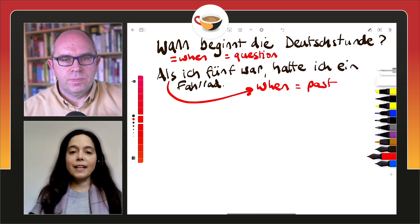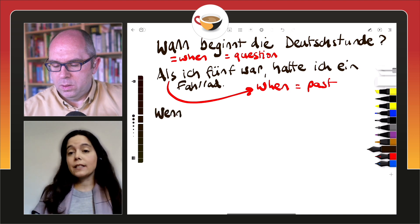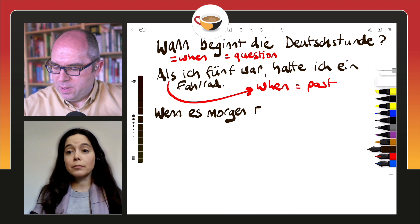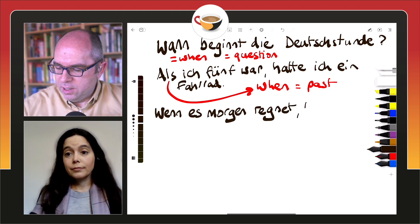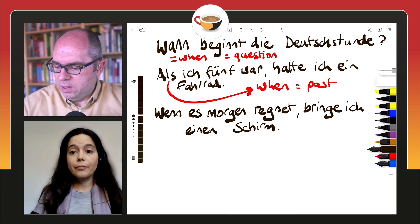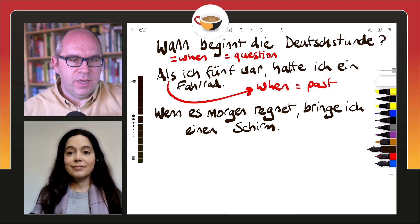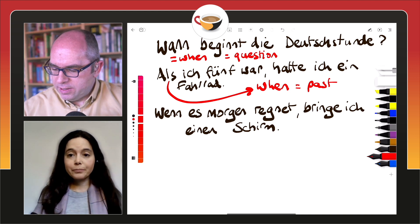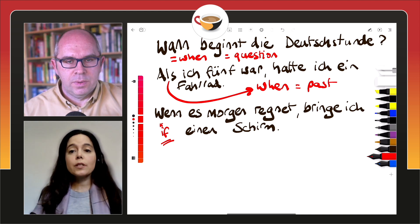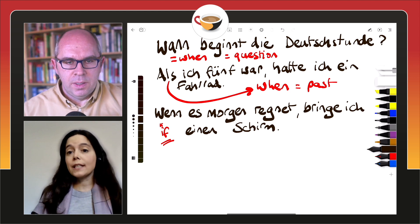And then let's look at wenn. I think wenn is the trickiest one, because wenn could mean 'if', but it could also mean 'when'. Let's look at a sentence where it means 'if'. For example, wenn es morgen regnet, bringe ich einen Schirm — if it rains tomorrow, I'll bring an umbrella. So there, wenn is meaning 'if'.